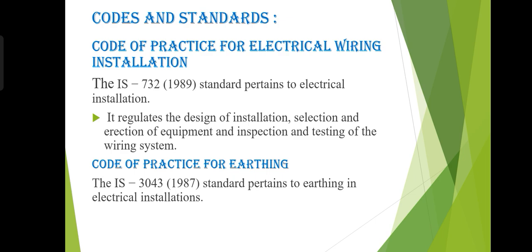Next, we see some codes and standards. Codes of practice for electrical wiring installation: IEA 732:1989 provides the standard electrical safety codes. It regulates the design, installation, selection, erection of equipment, and inspection and testing of the wiring system. The next code is the code of practice for earthing: IEA 3043:1987, which pertains to earthing in electrical installations.